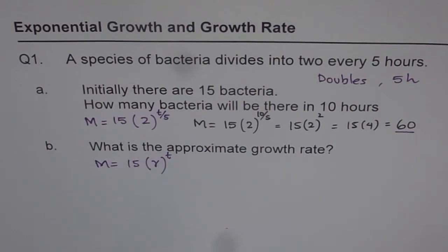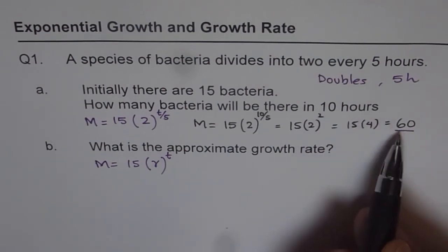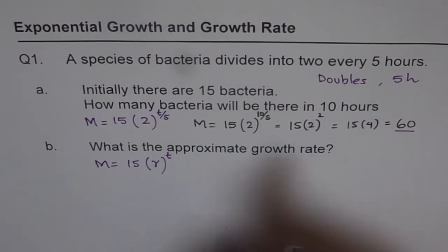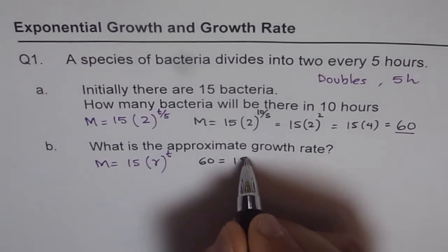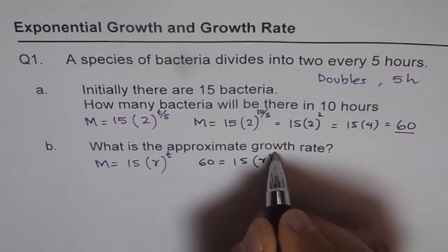It is kind of very important to understand this aspect. And now we know, after 10 hours, we have 60 bacteria. So we get our equation, that is 60 is equals to 15 times R to the power of 10.